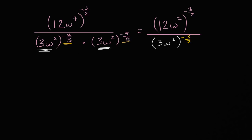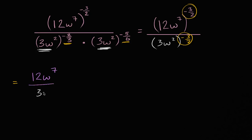Negative 2/3 plus negative 5/6 is negative 3/2. Now what's interesting is I have a negative 3/2 up in the numerator and a negative 3/2 in the denominator. So we can do the same thing we did in the last problem. This simplifies to 12w to the seventh power over 3w squared, all of that to the negative 3/2 power. I had something to the negative 3/2 divided by something else to the negative 3/2 — that's the same thing as doing the division first and then raising the quotient to the negative 3/2.